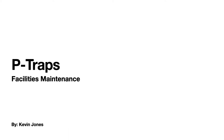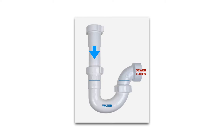P-traps are found throughout your facility — underneath sinks, built into the structure of water closets, and in floor drains. Here's a common P-trap you'll find underneath your bathroom sink or kitchen sink. Water comes down and the bottom portion is the P-trap.